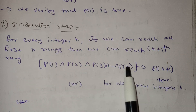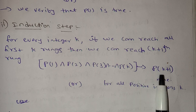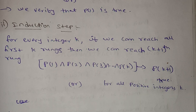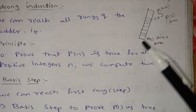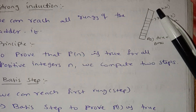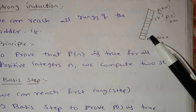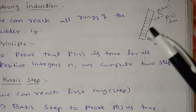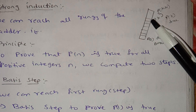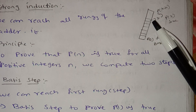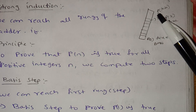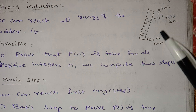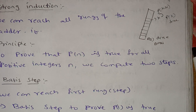That is, p(1), p(2), p(3), up to p(k) is true — then p(k+1) follows. This is p(0) through p(k). If we can reach all those rungs, we can directly reach p(k+1).